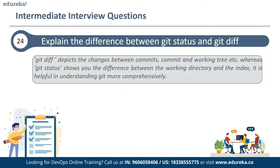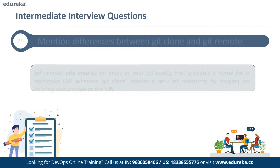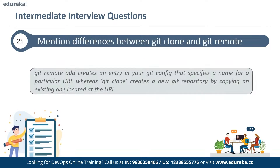The next question is: mention the differences between git clone and git remote. Git remote creates an entry in your git config that specifies a name for a particular URL, making convenience synchronization easier.